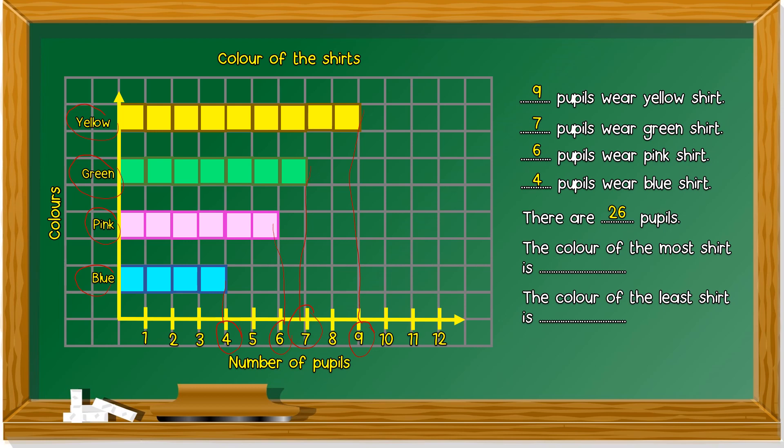The color of the most shirt is which one is the most? The longest, yeah. So it's yellow. The color of the least. Paling sedikit. Shirt is the least. Shortest one. Blue.